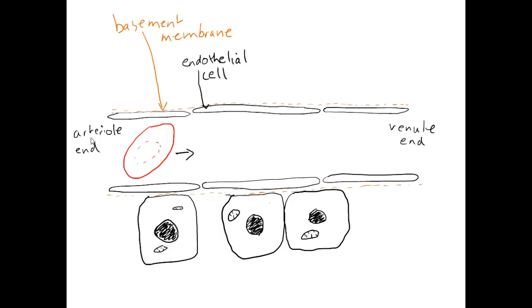We start at the arteriole end with fluid moving in this direction as per the arrow. Down at this end we have hydrostatic pressure which is high. So the hydrostatic pressure at that end is high. And by the time we get to the venule end the hydrostatic pressure is low because of the resistance through the capillaries.